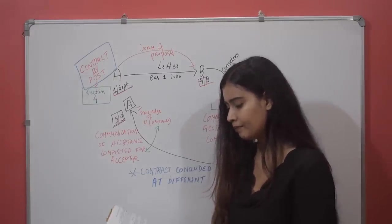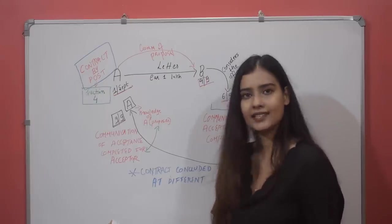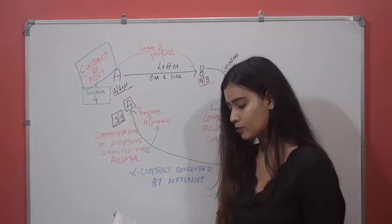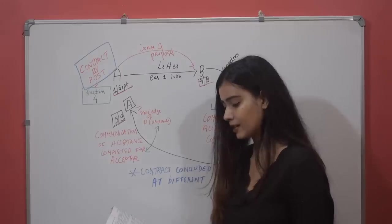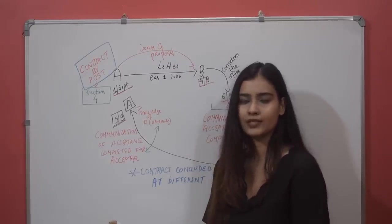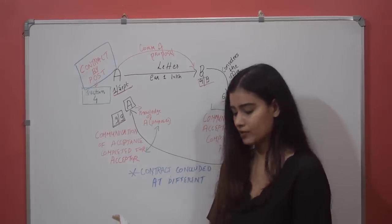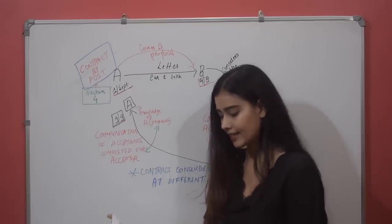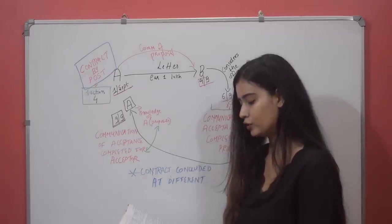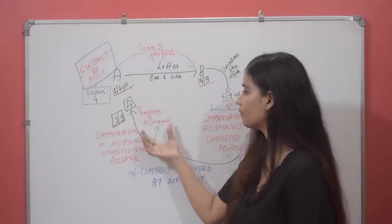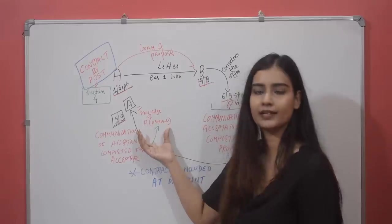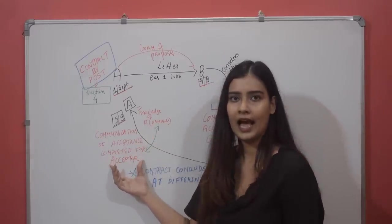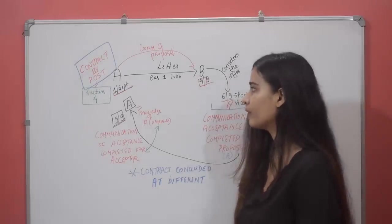Let me re-read this: 'The communication of an acceptance is complete as against the proposer when it is put in course of transmission to him so as to be out of the power of the acceptor' — meaning when the letter of acceptance is posted. And the second line: 'as against the acceptor, when it comes to the knowledge of the proposer' — meaning when A receives the letter, the communication of acceptance will be completed for the acceptor.